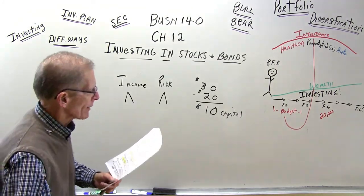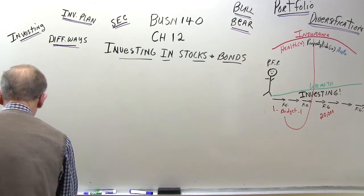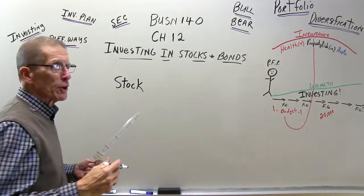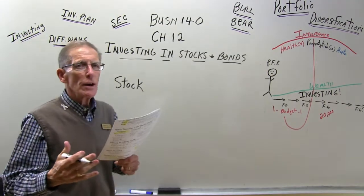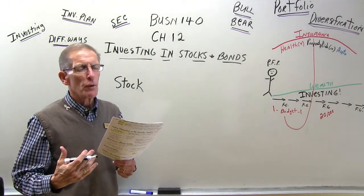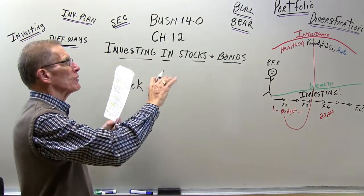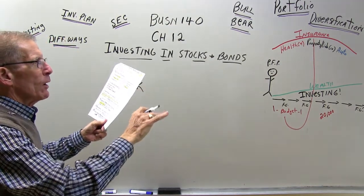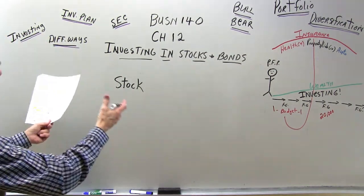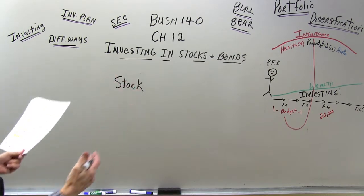Investing in common stock: stock is ownership in a company. Companies sell stock because they need to raise revenue — maybe for a new expansion or something that requires a good bit of money. They may not want to borrow that money, so they sell additional shares of stock. When you buy that stock, it puts additional money into the company that they can use for whatever they want to do.